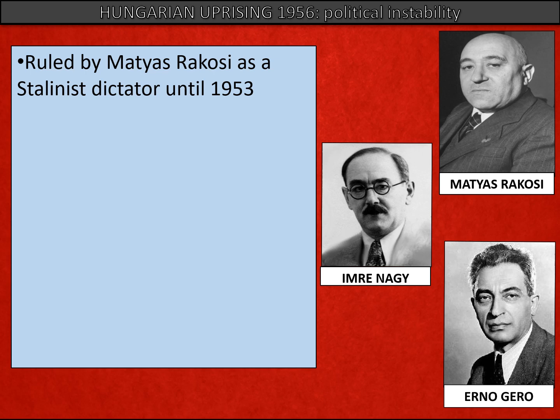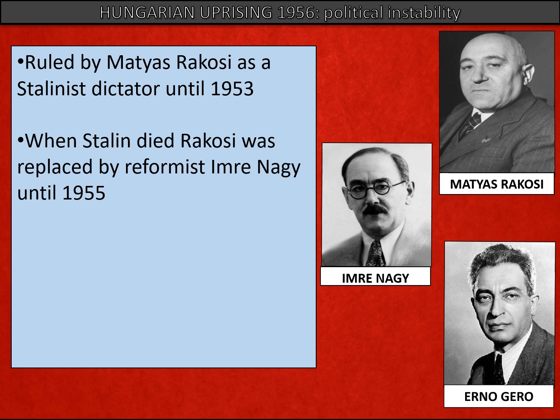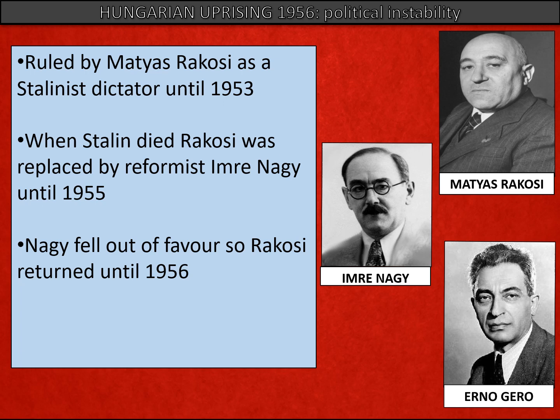Hungary was ruled by Rukosi as a dictator until 1953. He was loyal to the Stalinist regime, and this proved to be his undoing. When Stalin died, Rukosi fell from favour with Moscow and was replaced by a more reformist figure in the party, Imre Nagy. Nagy was still a communist and started a programme of limited reforms, but he also fell foul of what was deemed appropriate by Moscow, and he lasted until 1955.